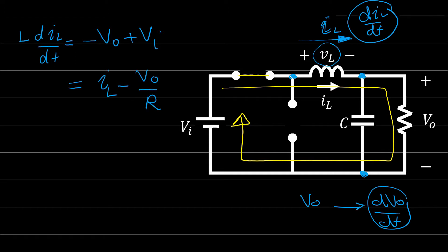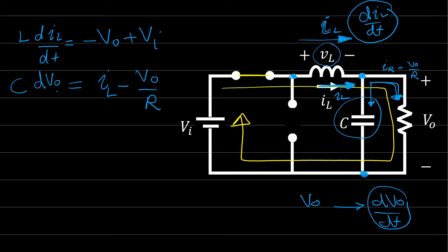The current in the capacitor is equal to I_L minus the current on the load. The current on the resistor is V_out over R, so the current in the capacitor is I_L minus V_out/R. Since the current in any capacitor is C dV_out/dt, we have found the state equations for when the switch is on.